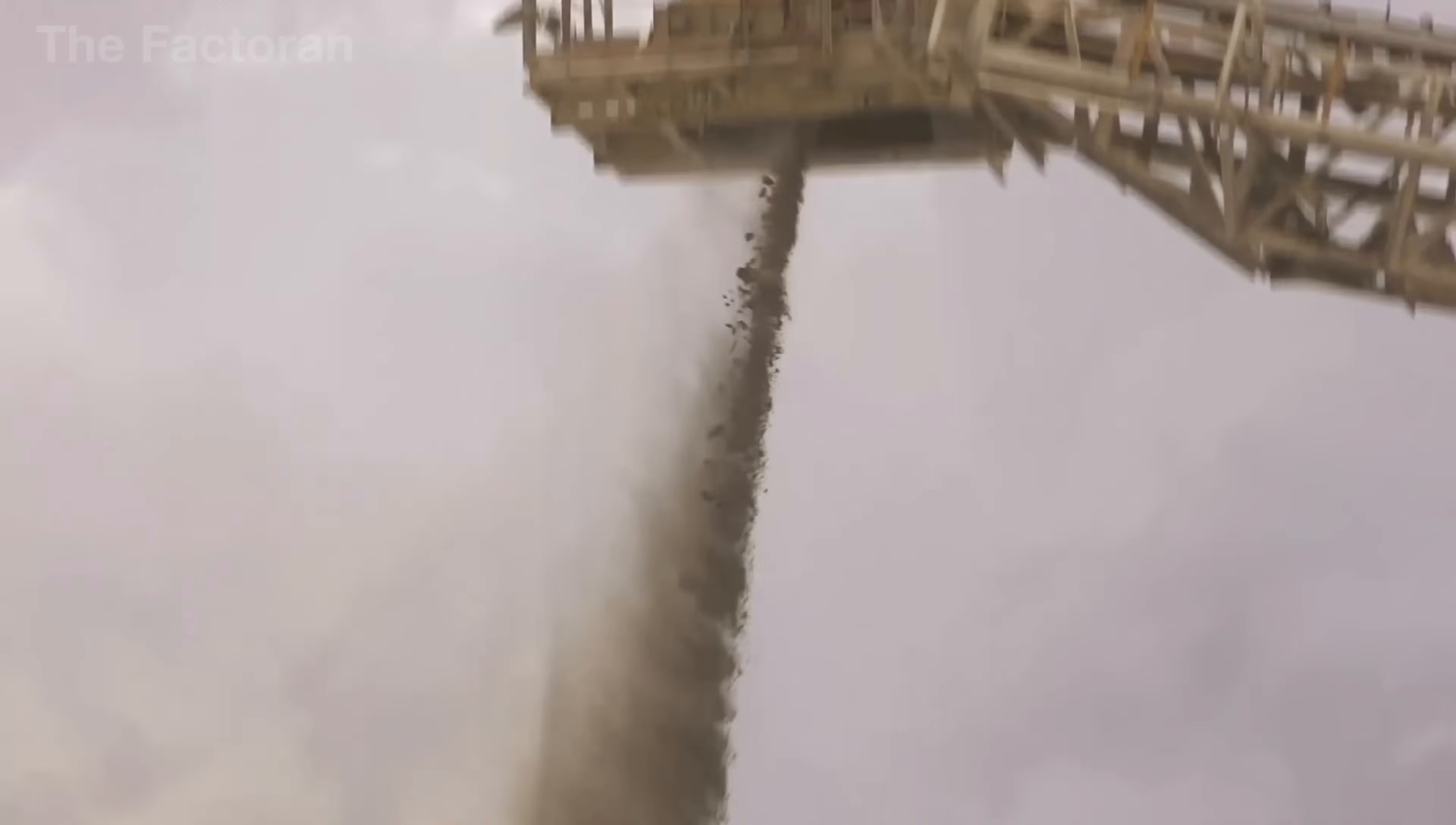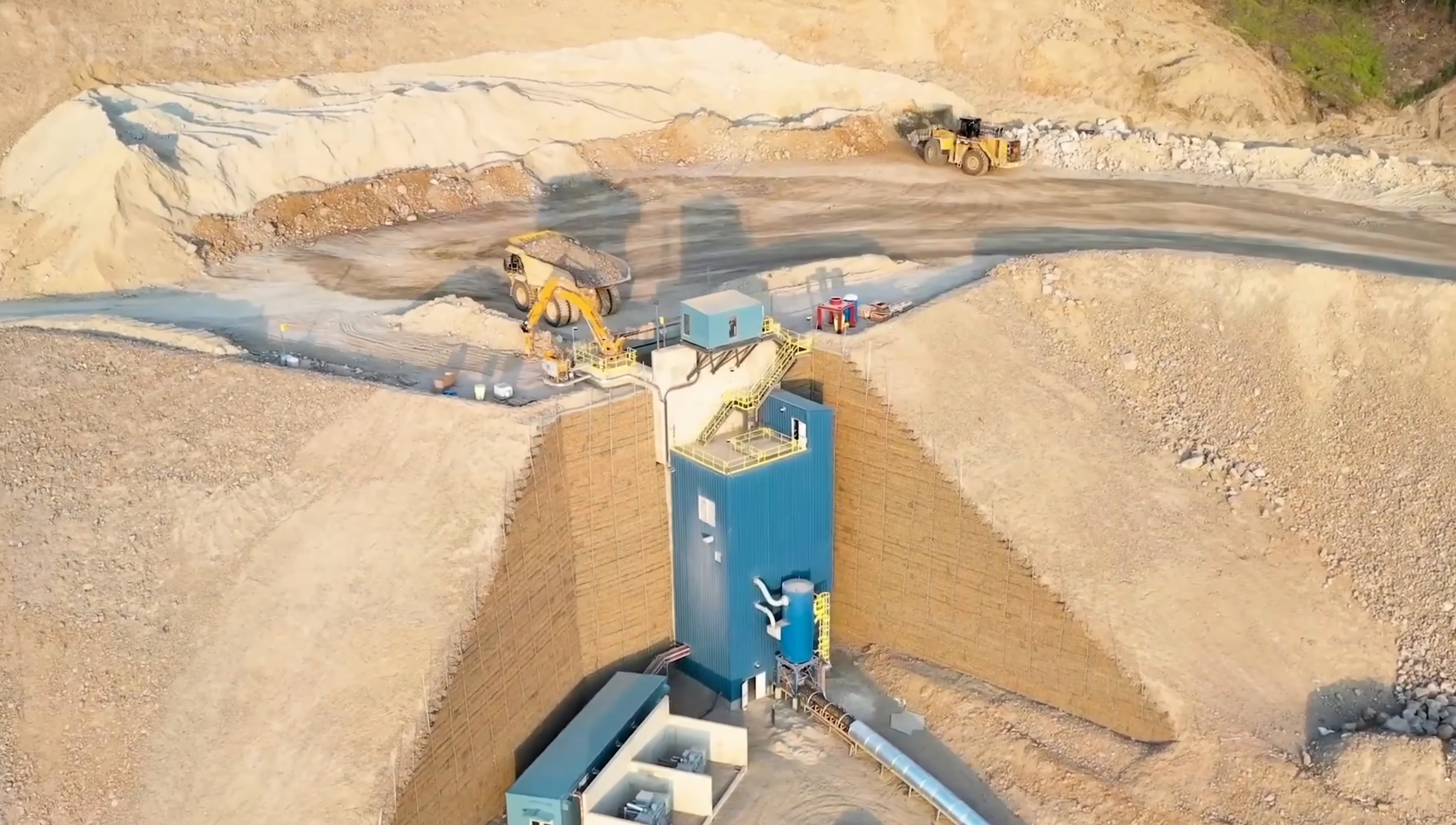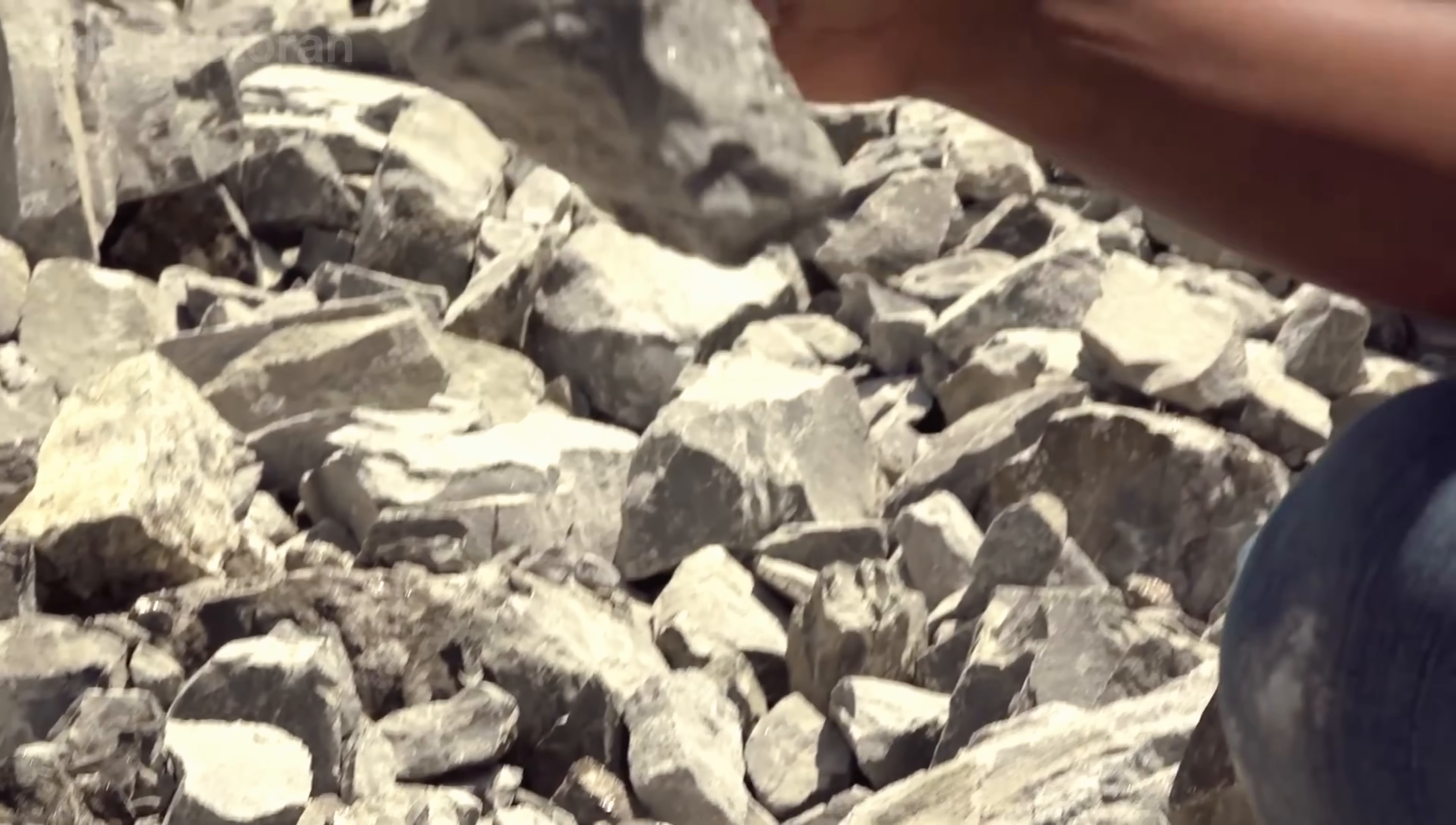Each fragment of bauxite is thoroughly washed, purified, and prepared for the next stage in the aluminum production journey, where heat, chemicals, and electrical energy will transform the raw mineral into pure metal, ready to be reborn as the aluminum frame of modern iPhones.